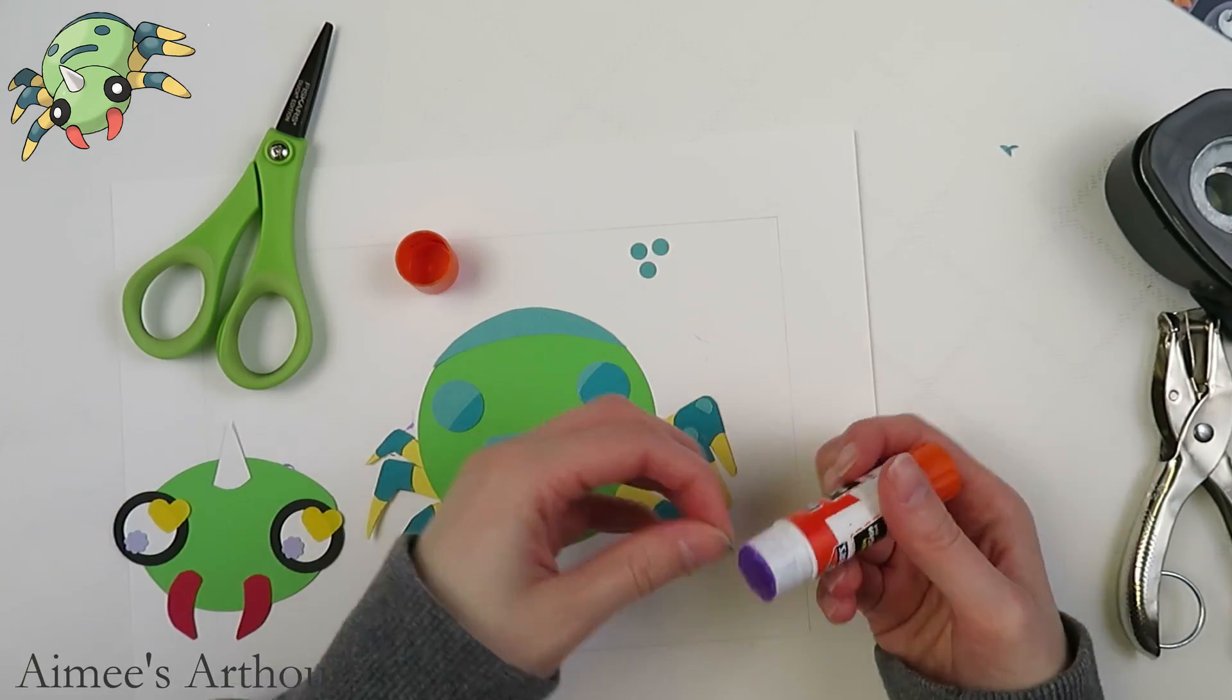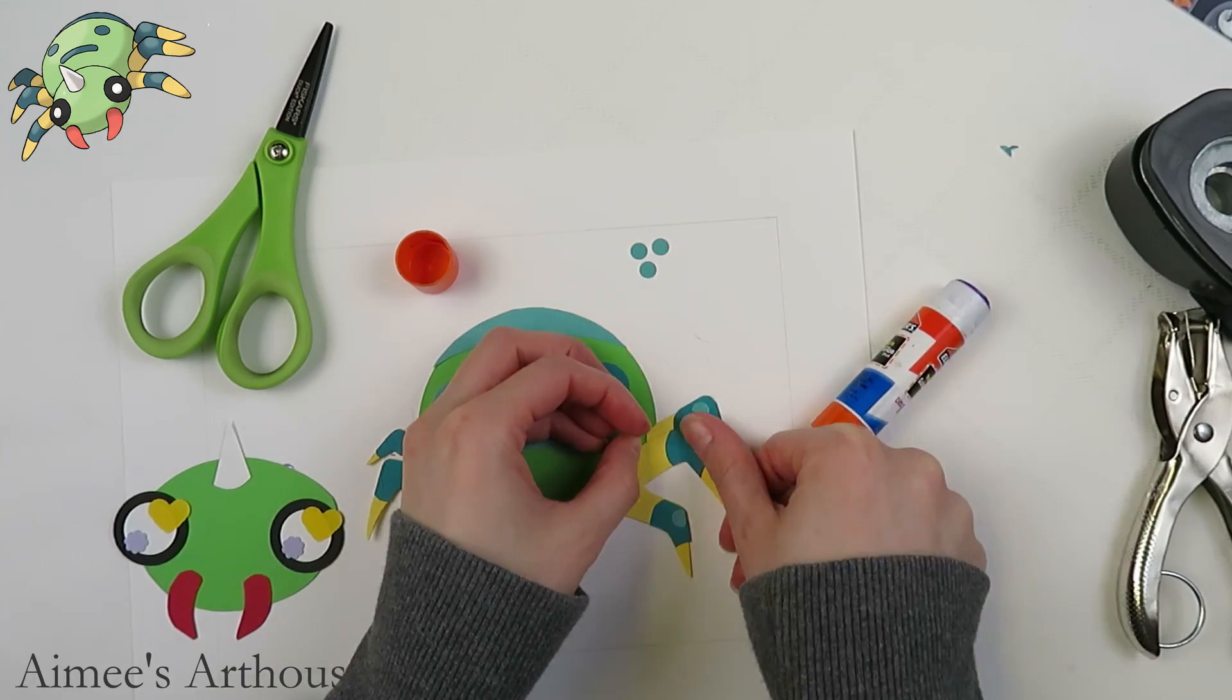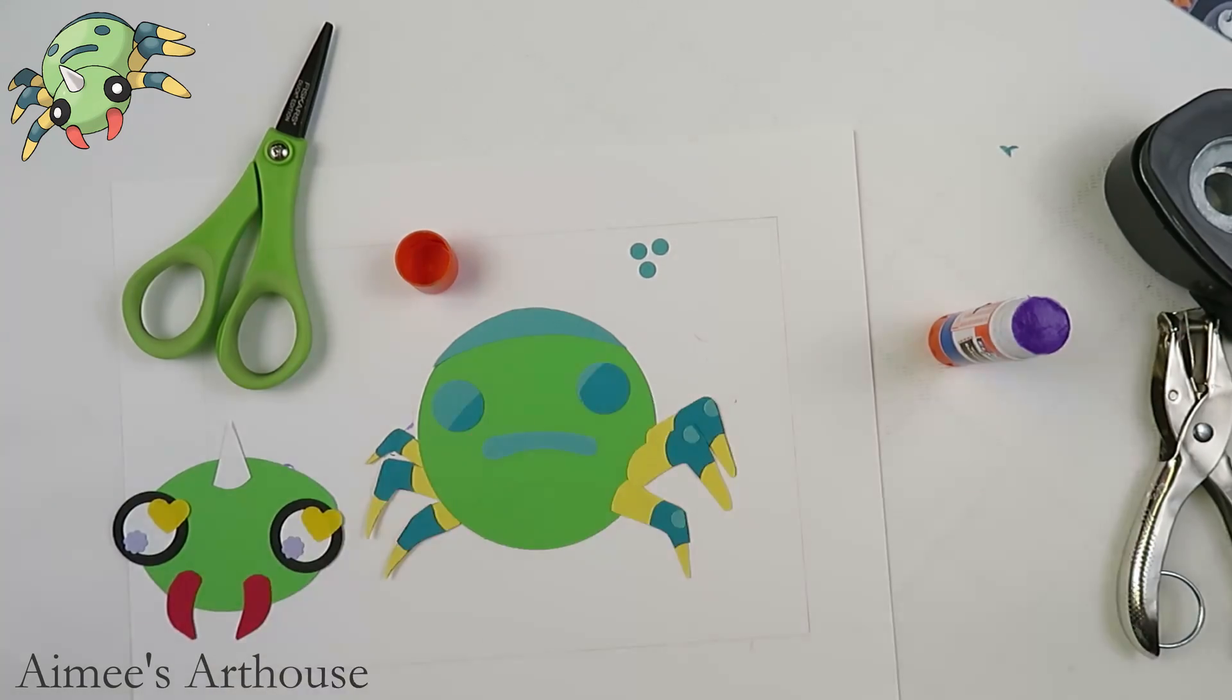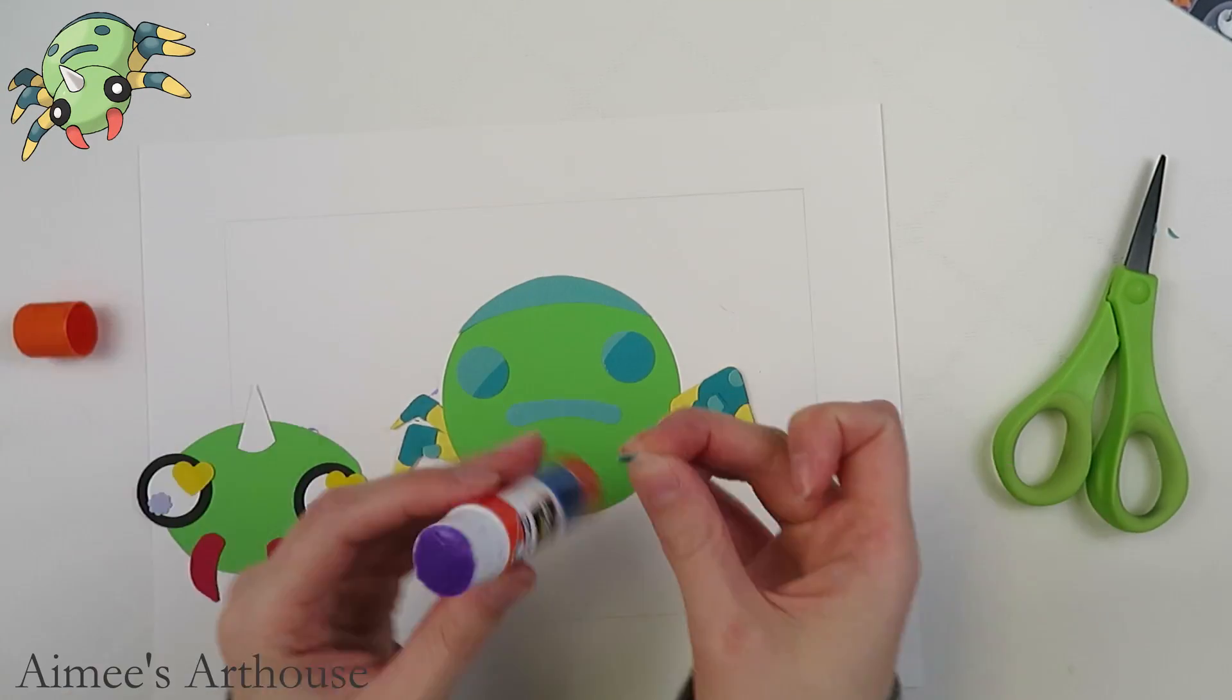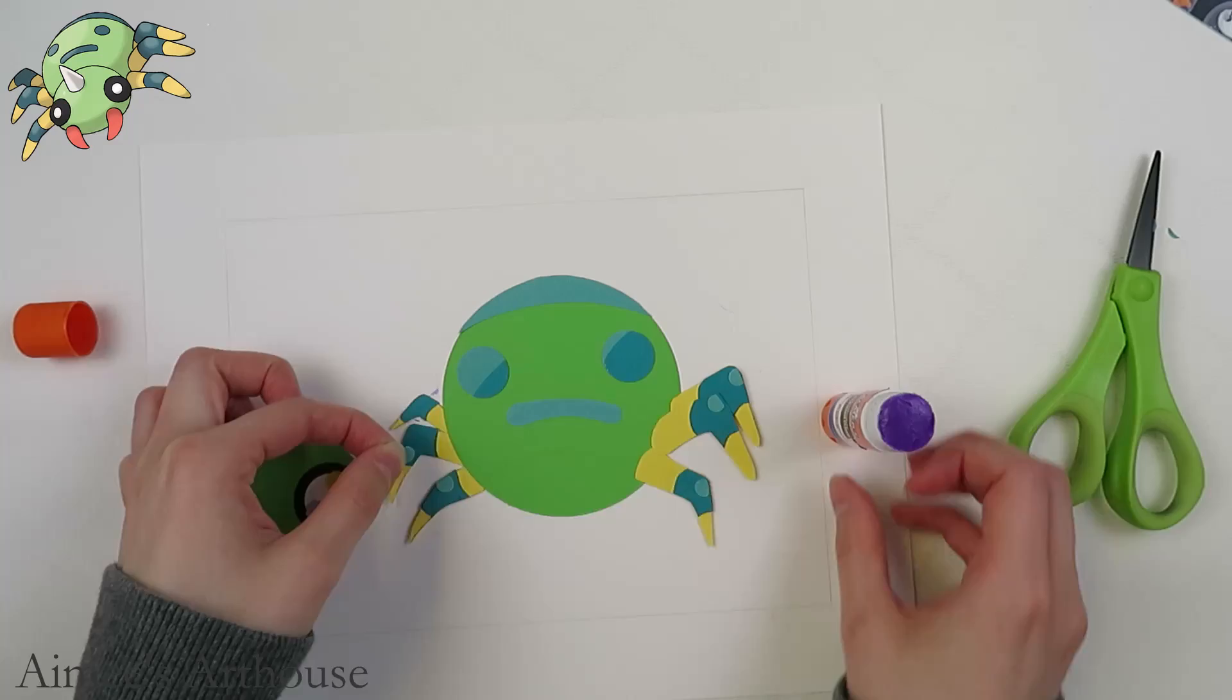So next, I used a small hole puncher to cut out some really tiny bits of teal, and that's just to kind of show some shading on his legs. In the game art, they're a little bit lighter, where his legs bend.